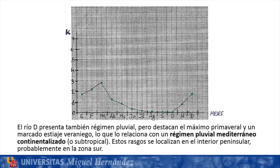Finally, river D also presents a pluvial regime, but notable is the spring maximum and a marked and prolonged summer low-water period — we see three months with a value of zero. This relates it to a continentalized Mediterranean pluvial regime, also called subtropical. These features are located in the interior of the peninsula, and this prolonged summer drought suggests quite southerly zones.